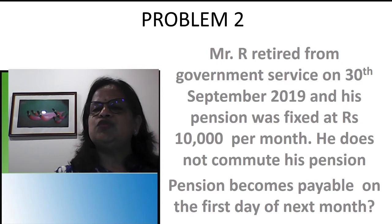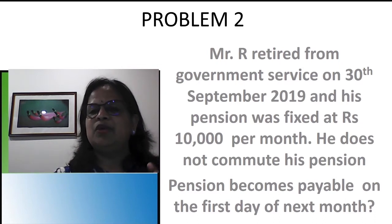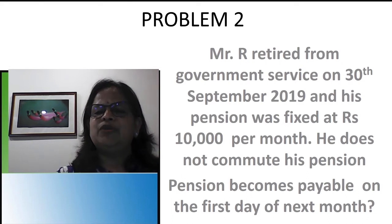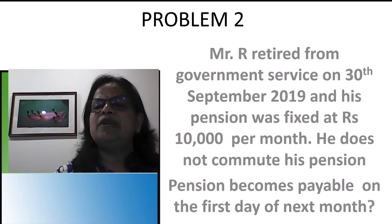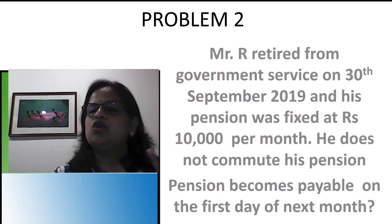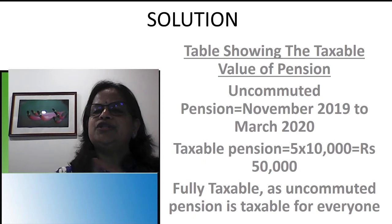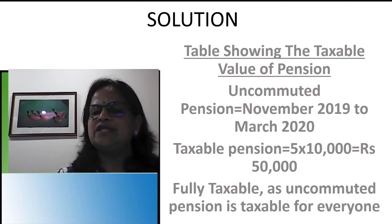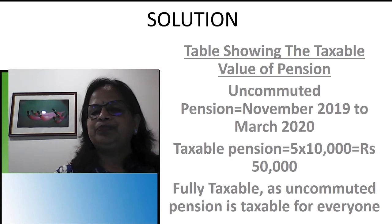Problem 2: Mr. K retired from government service on 30th September 2019 and his pension was fixed at rupees 10,000 per month. He has not commuted his pension — so it is uncommuted. Pension is payable on the first of next month. Though he is a government employee, uncommuted pension is fully taxable for everyone. He retires 30th September, so pension for October comes in November. He gets pension for November, December, January, February, March — five months × 50,000 fully taxable.